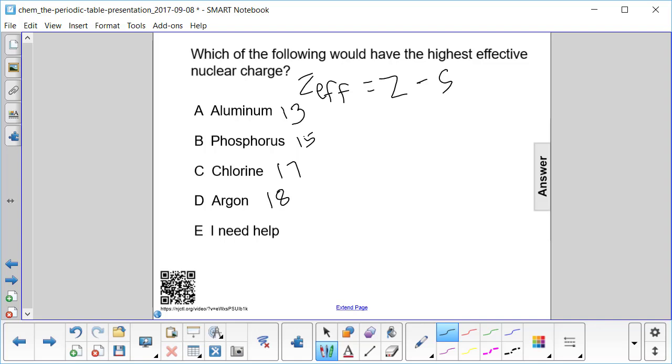So all of these have, if I were to write a shorthand electron configuration, they would all have neon as their core. I'll just do the first two. Remember that aluminum is 3s2, 3p1, phosphorus is 3s2, 3p3, and so on. And so we're just looking at these electrons in the third shell.